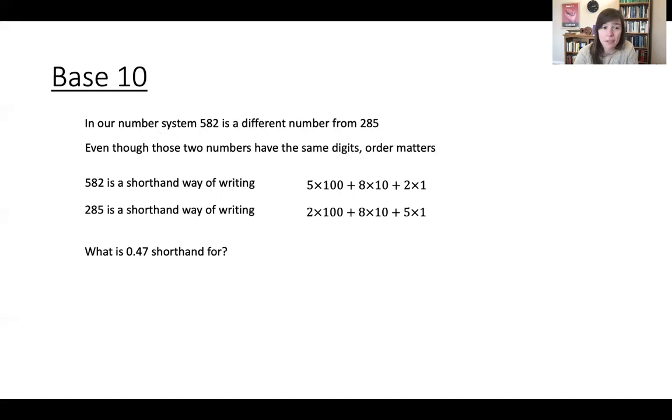Well, it turns out that 0.47 is shorthand for 4 times 1 tenth plus 7 times 1 hundredth. And so if you're writing these powers of 10, which we're not going to spend a lot of time doing in this class, but just if that's something you're comfortable with, 1 tenth is 10 to the negative 1, and 1 hundredth is 10 to the negative 2.